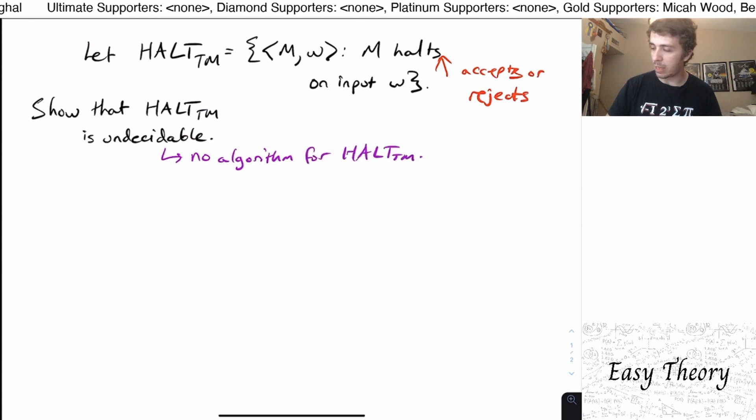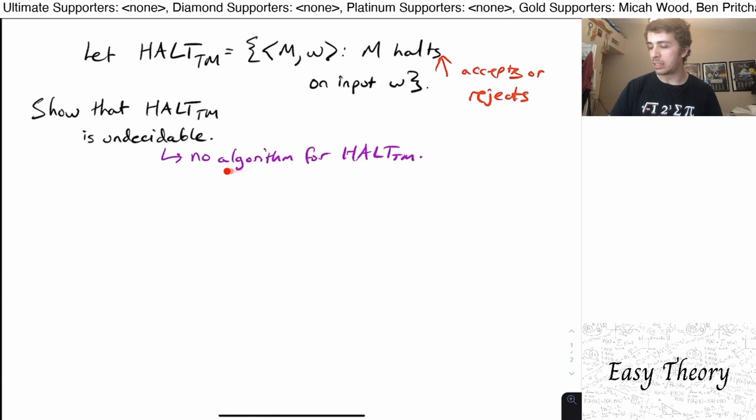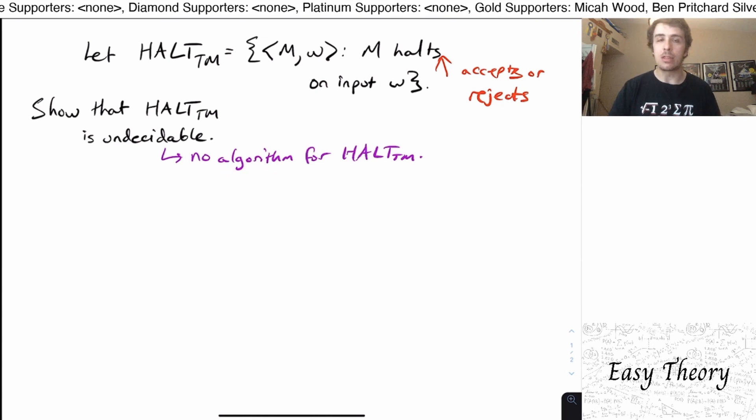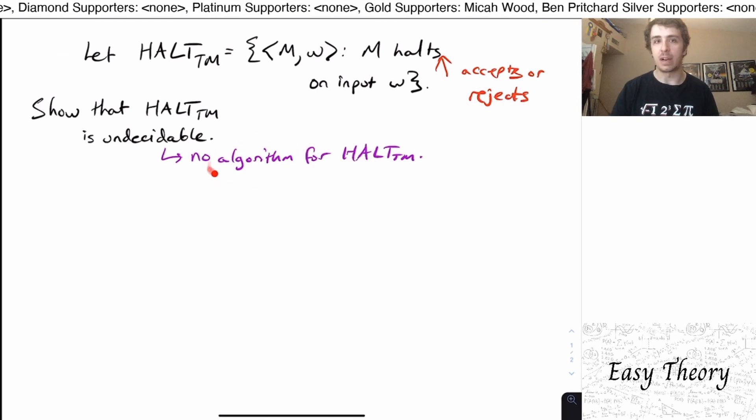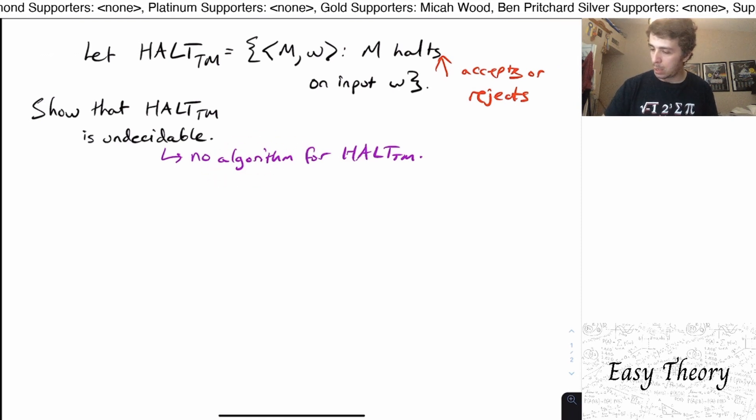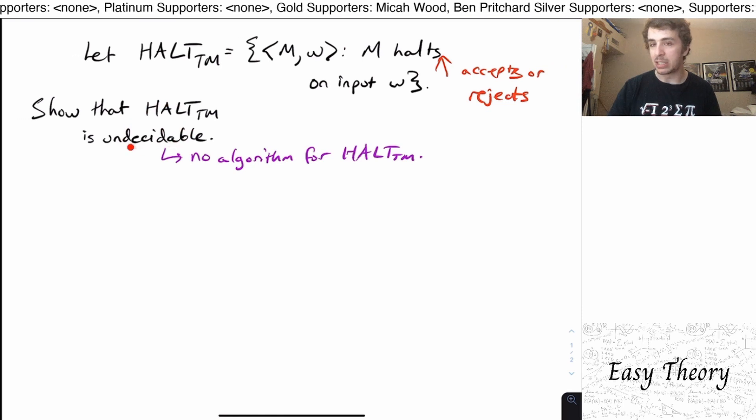No matter how clever you think you are in designing an algorithm for it, it either doesn't work or doesn't run in a finite amount of time because every algorithm runs in a finite amount of time. So how would you actually show that something is undecidable?